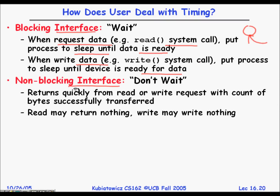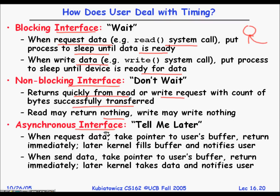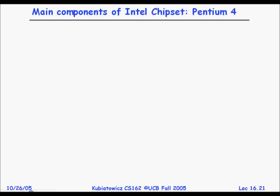Another paradigm is the non-blocking interface: return quickly from a read or write request with a count of bytes successfully transferred — read or write may return nothing and that's fine. Then there is the asynchronous interface: you request data from the I/O device, pass a pointer to a buffer, and continue without waiting. The kernel fills the buffer and then notifies you when it is done.